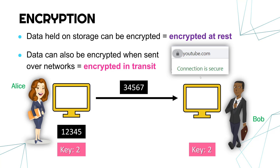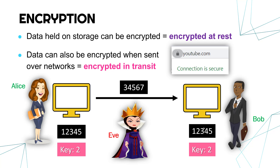Bob will know the key as well, so Alice can send her data in an encrypted version — scrambled in some way. Here the example just adds two to the numbers, but in reality it uses very complicated maths which can't be easily reversed. Because Bob knows the key, he can easily decrypt and understand it. The key message is that encryption does not prevent somebody intercepting the data — someone like Eve could see the file — but without the key they can't understand it. Encryption doesn't prevent access; it just prevents understanding without the secret key.